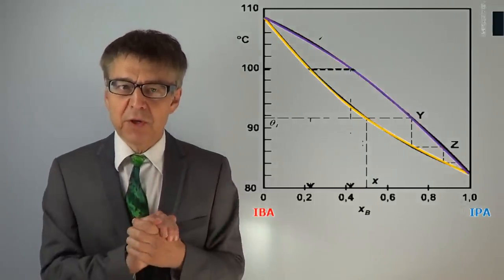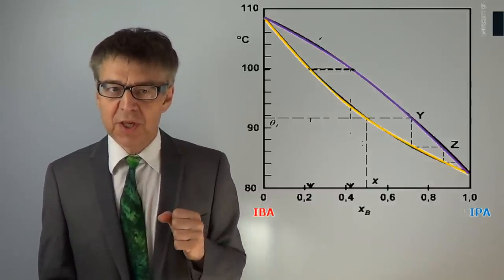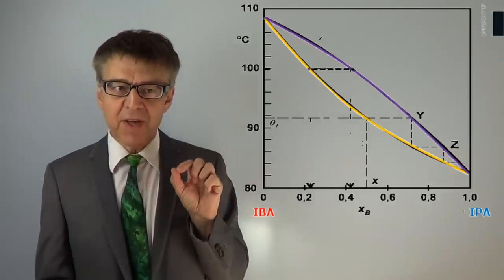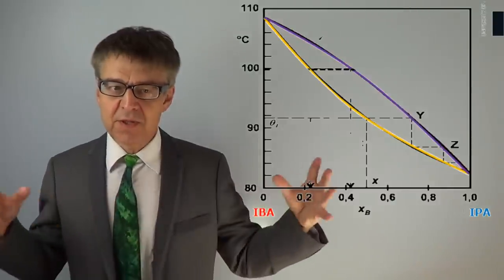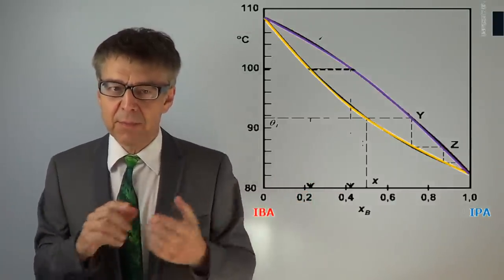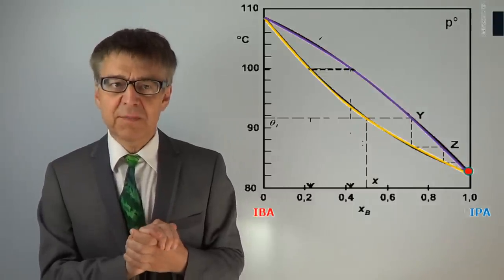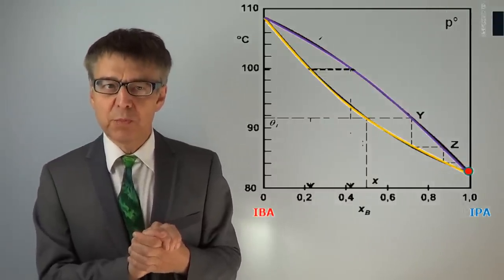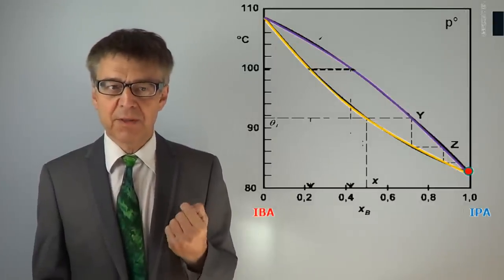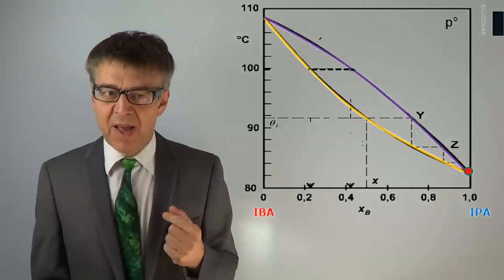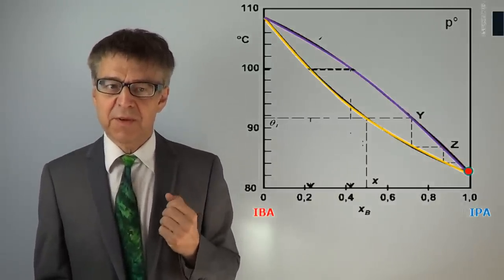Between the bubble point curve and dew point curve there is a two-phase region. If we plot a point in this area, the system is unstable in a homogeneous state but will decompose into two phases. For an ideal mixture, bubble point curve and dew point curve meet in only two points — the so-called invariant points of the phase diagram. At these points, the system has no degree of freedom according to the Gibbs phase rule.